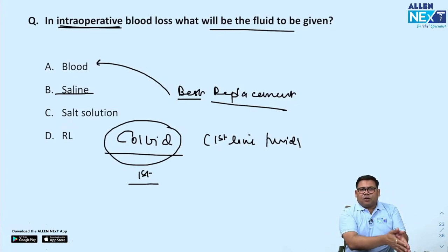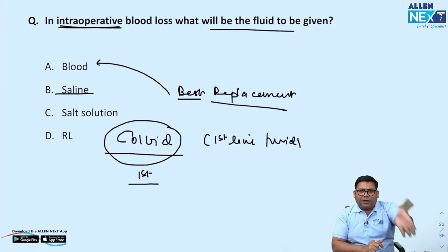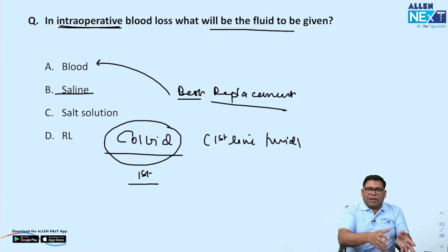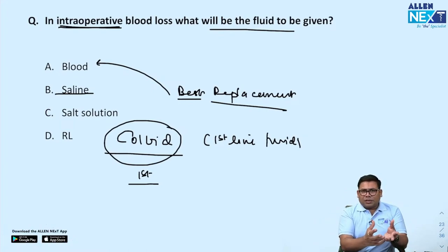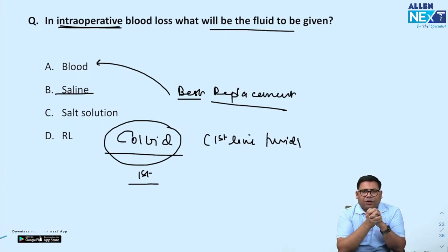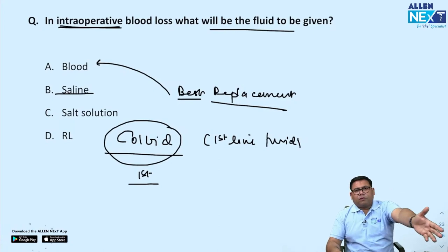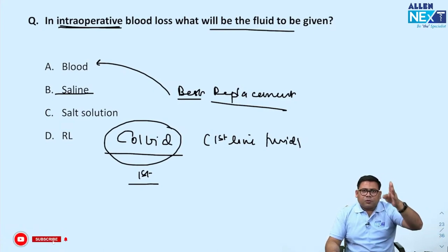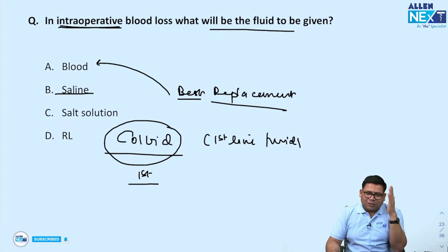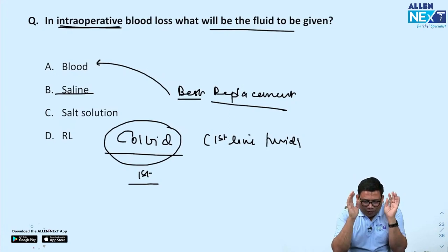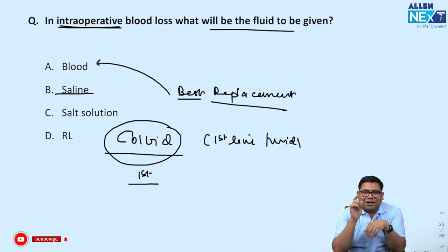In the ER, if the patient is brought with history of trauma with bleeding, the first line fluid will be crystalloid NS. If the patient is already in the OT on crystalloids, intraoperative bleeding requires colloid as the bridge, and blood as the definitive replacement. I hope you enjoyed the surgery session. Do continue watching the channel for other recalls. Exams are done — whatever happened, leave it. Enjoy your day and your life — one life, it will never come back. Bye-bye.